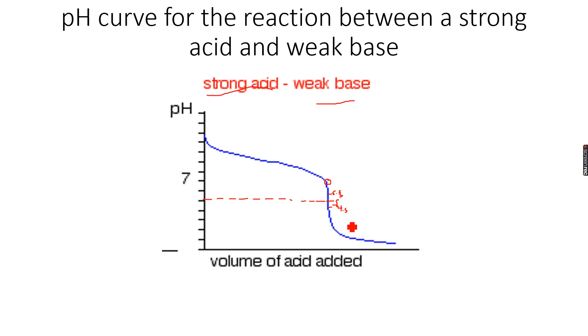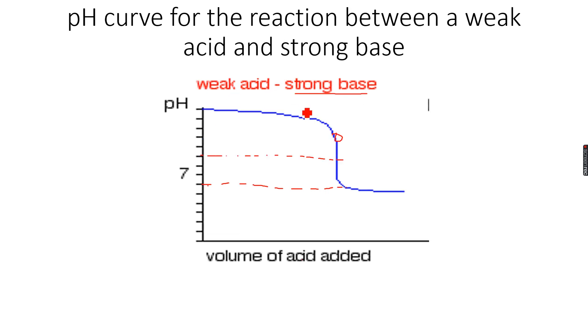Use an indicator which gives a color change between 4.5 and 5.5 for the reaction between a strong acid and a weak base. When doing a titration between a weak acid and strong base, let's take this as 9, so this will be 9.5 and this will be 8.5.